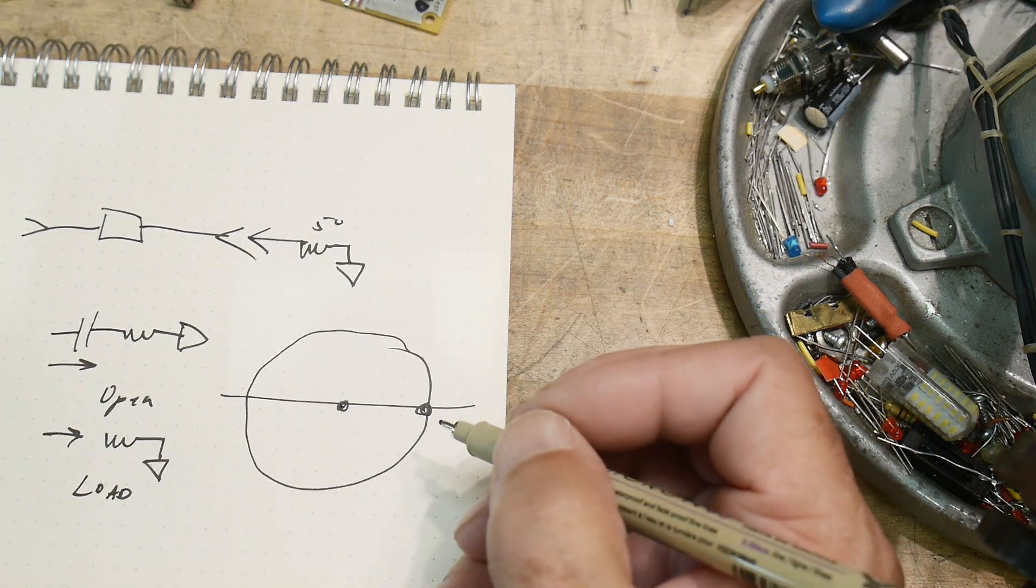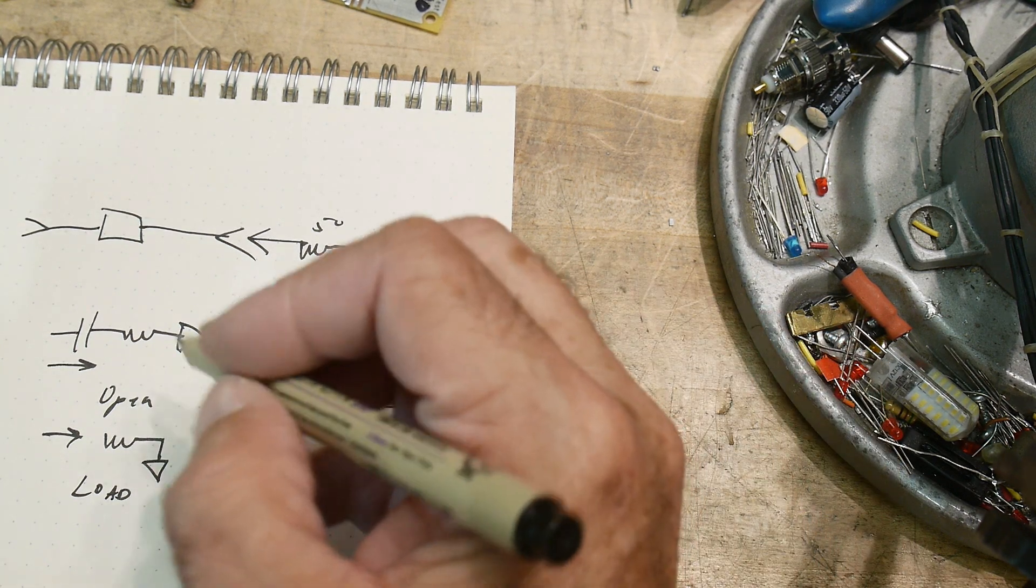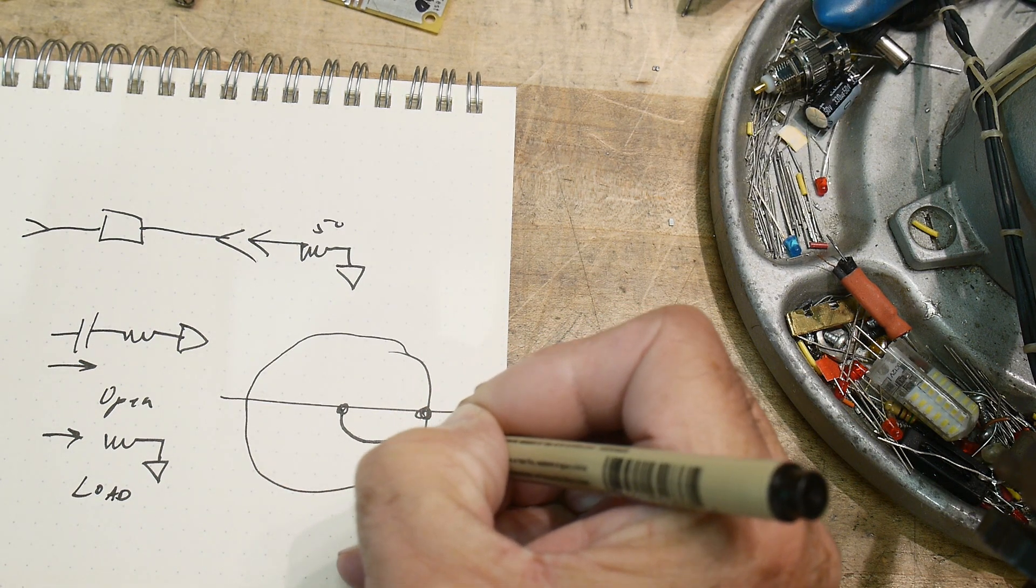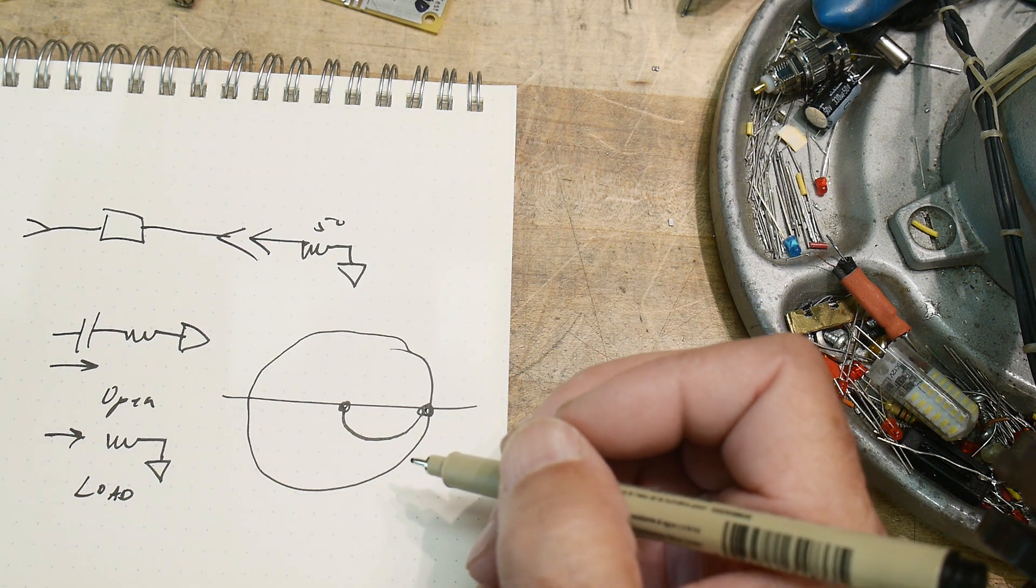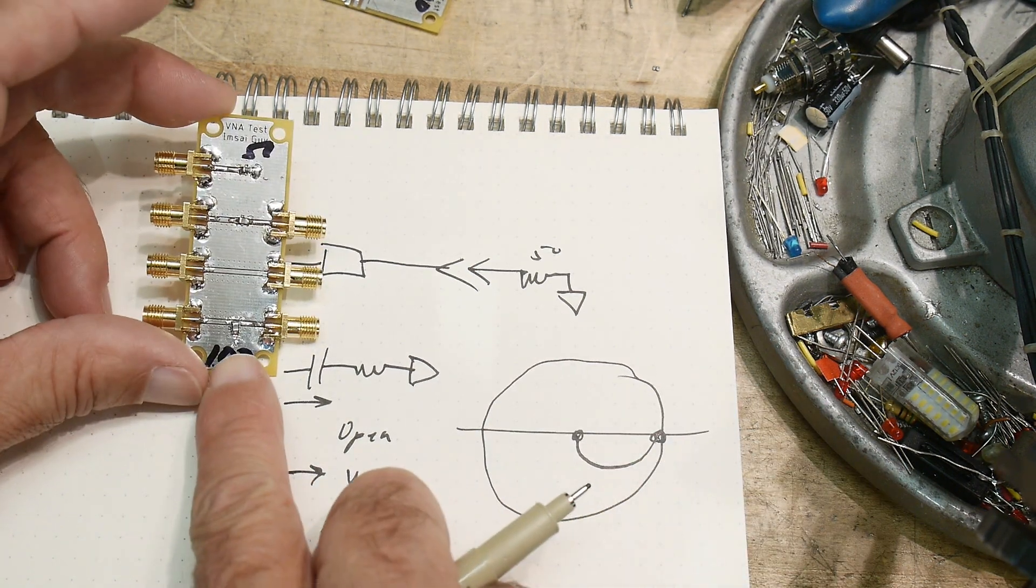The path that you take to get from one to the other in a series situation is this line here.